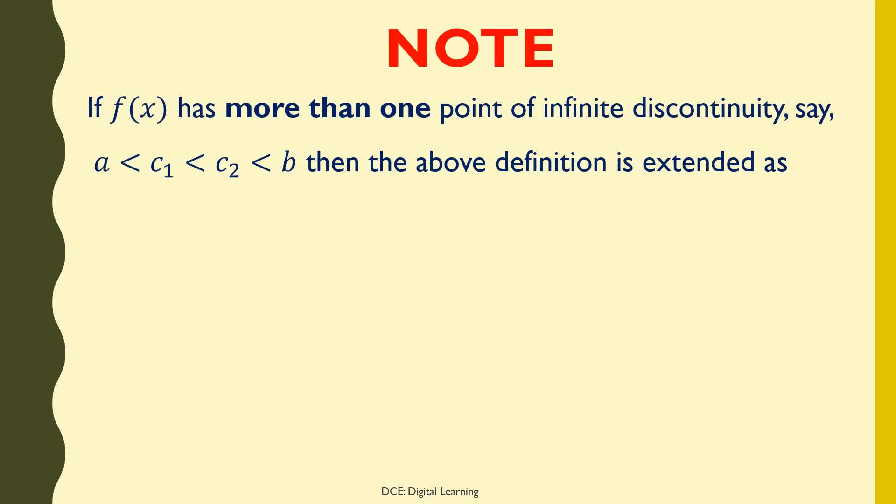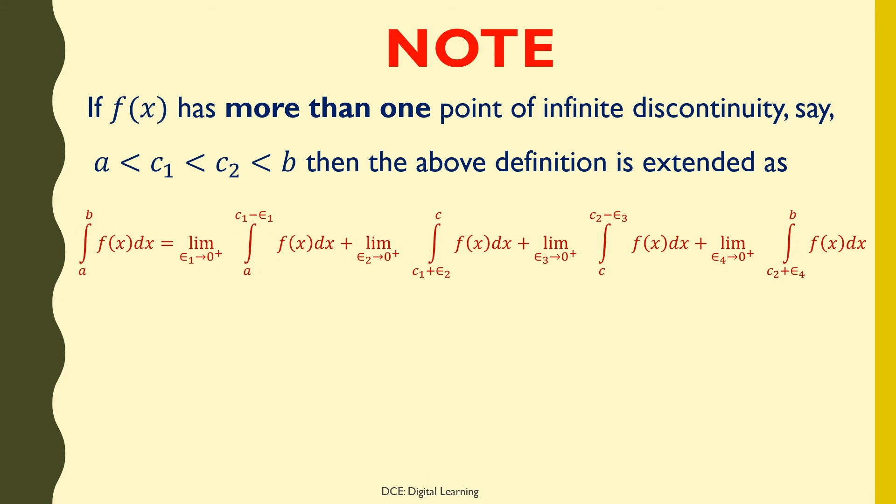Note: If f(x) has more than one point of infinite discontinuity, say a < c₁ < c₂ < b, then the definition is extended as: integral of f(x) dx from a to b equals the limit of the integral from a to c₁ − ε₁ as ε₁ → 0⁺, plus the limit of the integral from c₁ + ε₂ as ε₂ → 0⁺, plus the limit of the integral approaching c₂ − ε₃ as ε₃ → 0⁺, plus the limit of the integral from c₂ + ε₄ as ε₄ → 0⁺, where c is any real number in the open interval (c₁, c₂).